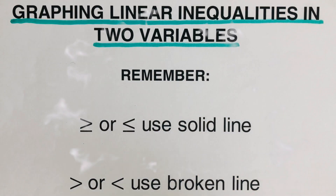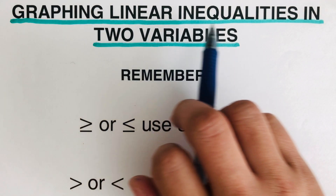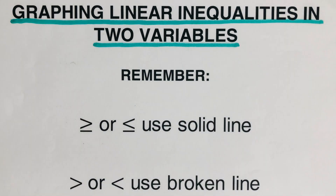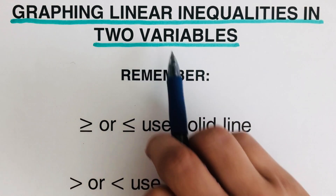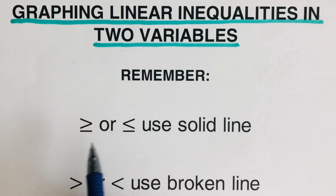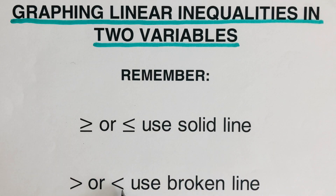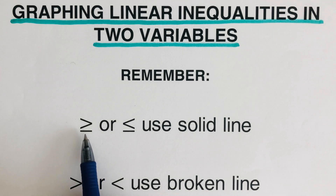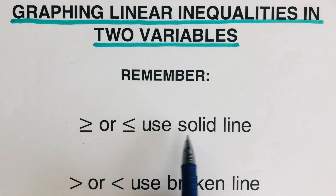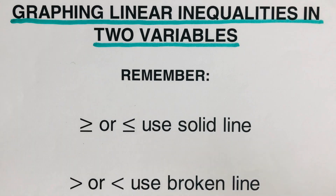Hello everyone. In this video we will be graphing linear inequalities in two variables. When graphing inequalities in two variables, we need to remember: if we have greater than or equal to, or less than or equal to, we use a solid line. If we have greater than or less than with no bar underneath, we use a broken line.